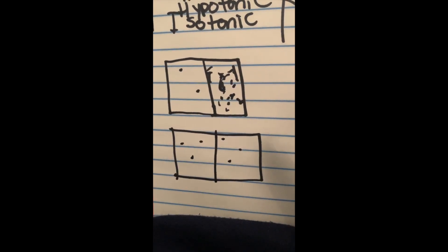Isotonic is what we want. It means water and solutes, the stuff that mixes in the water, are spread out evenly.